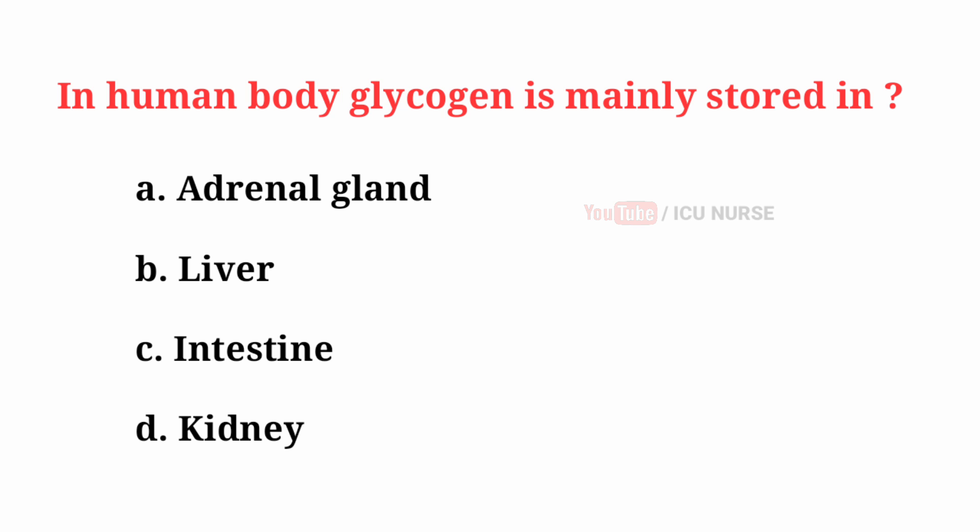In the human body, glycogen is mainly stored in — the correct answer is B: Liver.